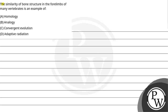Let's see this question. The question says: the similarity of bone structure in four limbs of many vertebrates is an example of — option A: homology, option B: analogy, option C: convergent devolution, and option D: adaptive radiation.